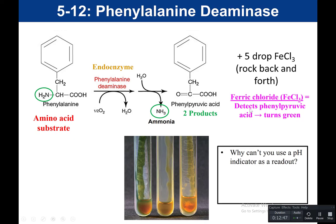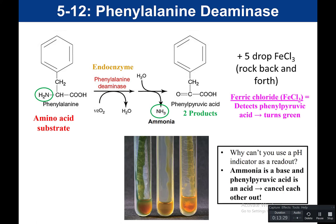There is no pH indicator in this test. When you fill out your biochemical sheet under pH indicator, you put none. Look at the two products: ammonia is alkaline, and phenylpyruvic acid is acidic. They cancel each other out, so we can't use a pH indicator. Instead, our reagent — ferric chloride — detects the phenylpyruvic acid specifically.